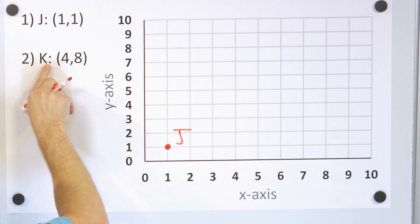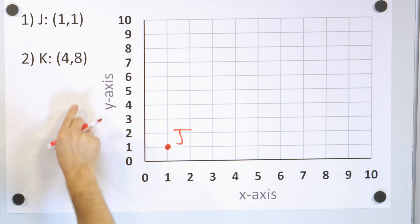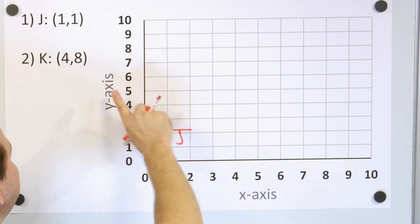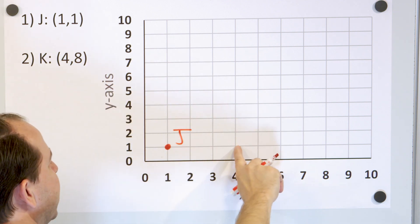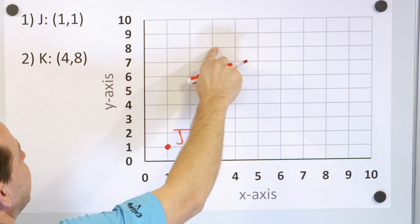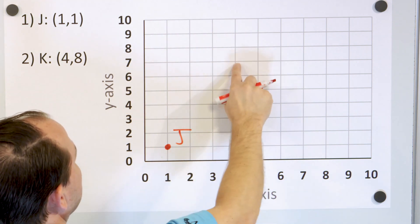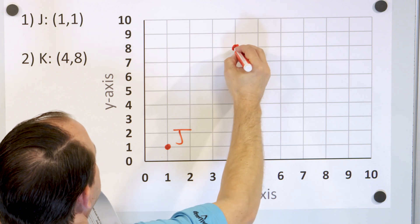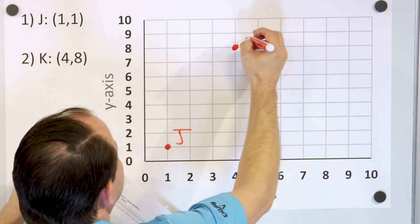Point K is 4 comma 8. X is the first number, which is 4, so we go along x to 4. Then we go 8 units up: 1, 2, 3, 4, 5, 6, 7, 8. Notice we can read 8 right off — so 4 comma 8 means it's right here. The label is point K. We can check: x is 4, y is 8.